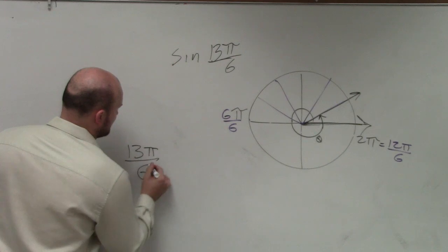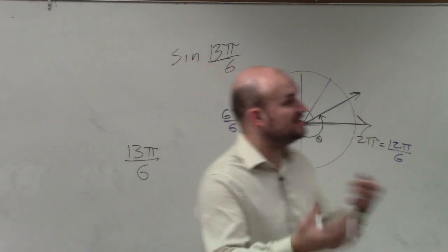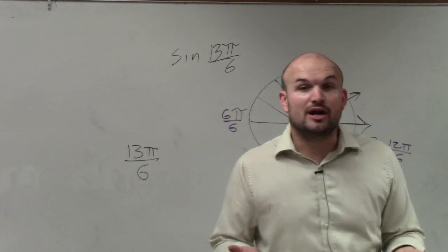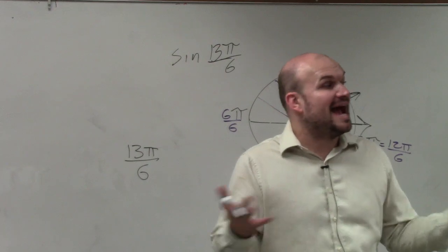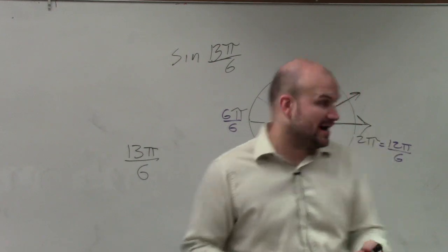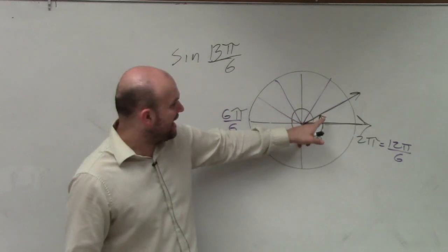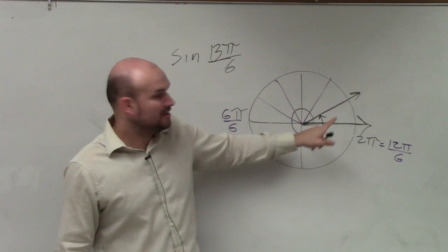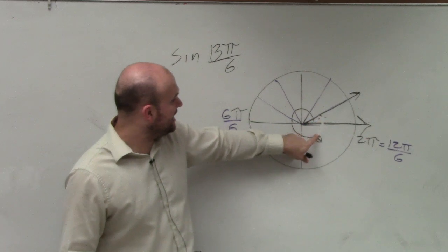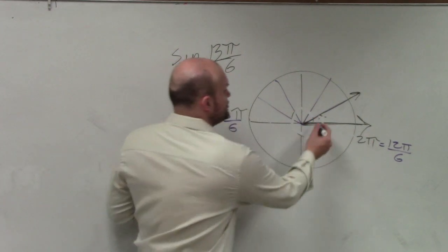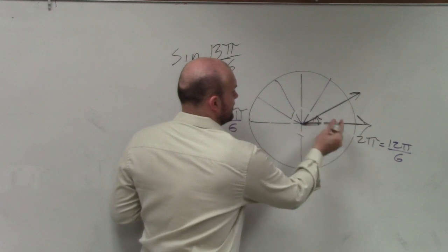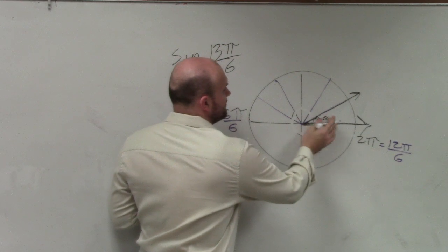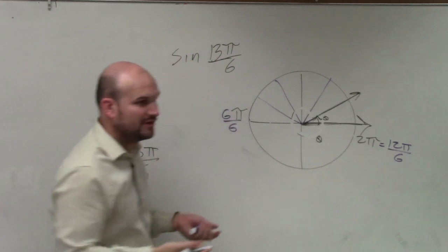And if you remember, our definition of coterminal angles was angles that have the same initial and terminal side. And then all you need to do to do that is add 2 pi or subtract 2 pi. Well, if I add 2 pi, that's going to go around the circle one more time. That's not going to help me out, right? So I could subtract 2 pi, which would then just give me that angle, which then I could create one.